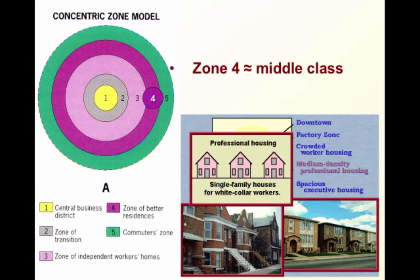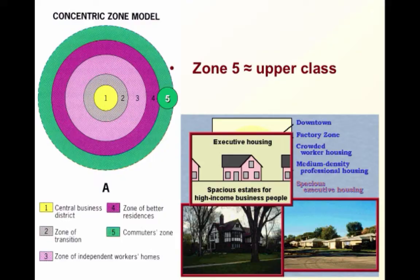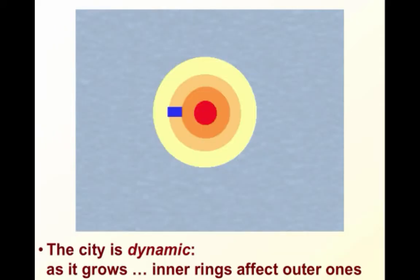Moving further away, you get to zone four, which is more of the middle class — single family houses for white collar workers, executives, managers, and other higher level administrators. And then finally, in zone five, you get to the upper class: spacious estates for high income business people. Back in the 1920s, where most people could not afford automobiles, those who could used their money wisely to move away to where it was less noisy, less crowded, more open, and more desirable.